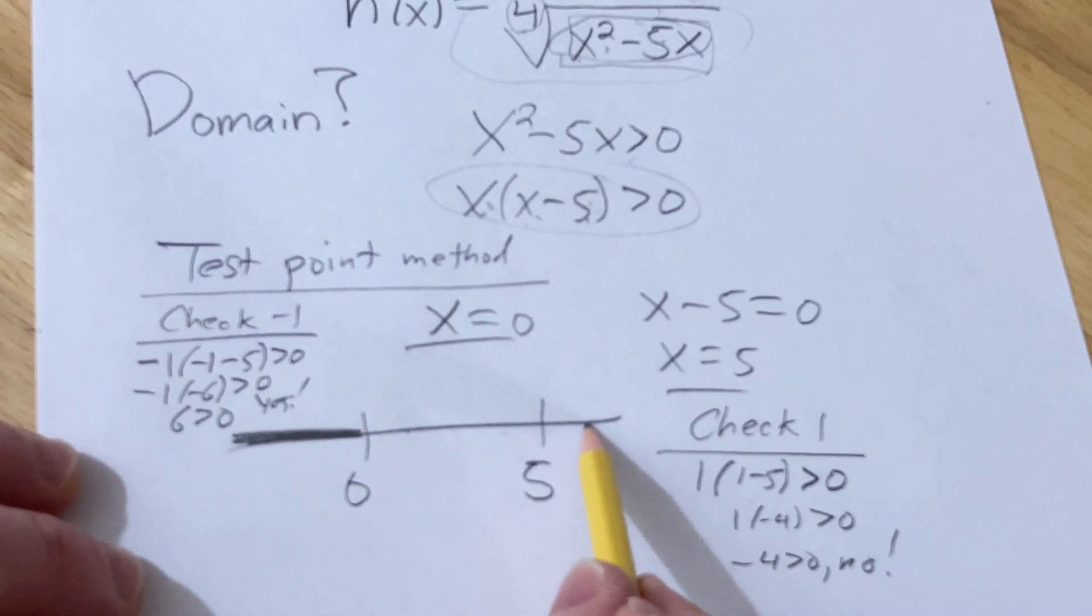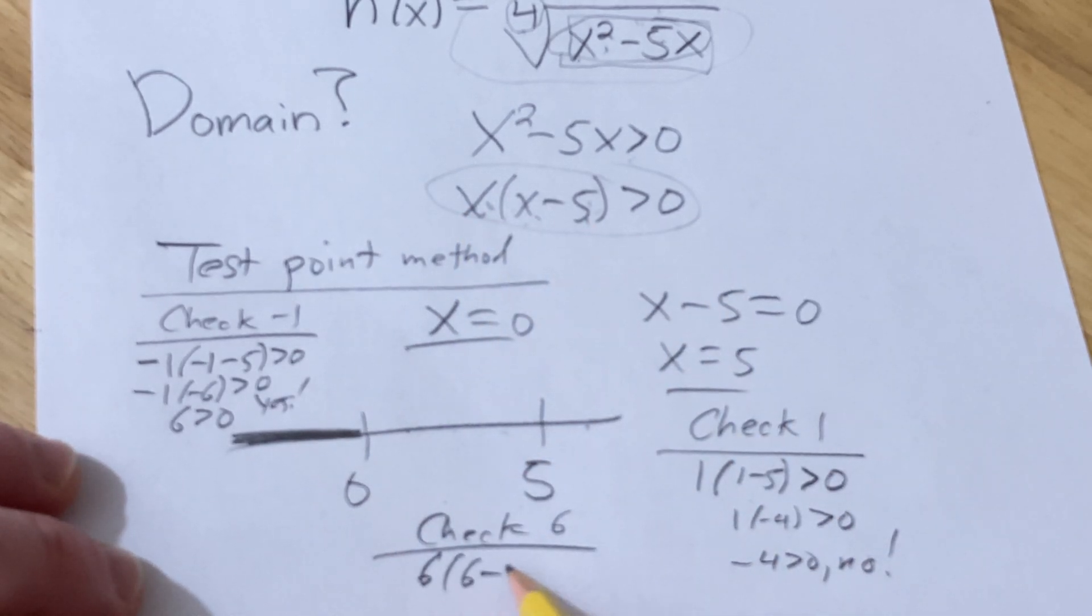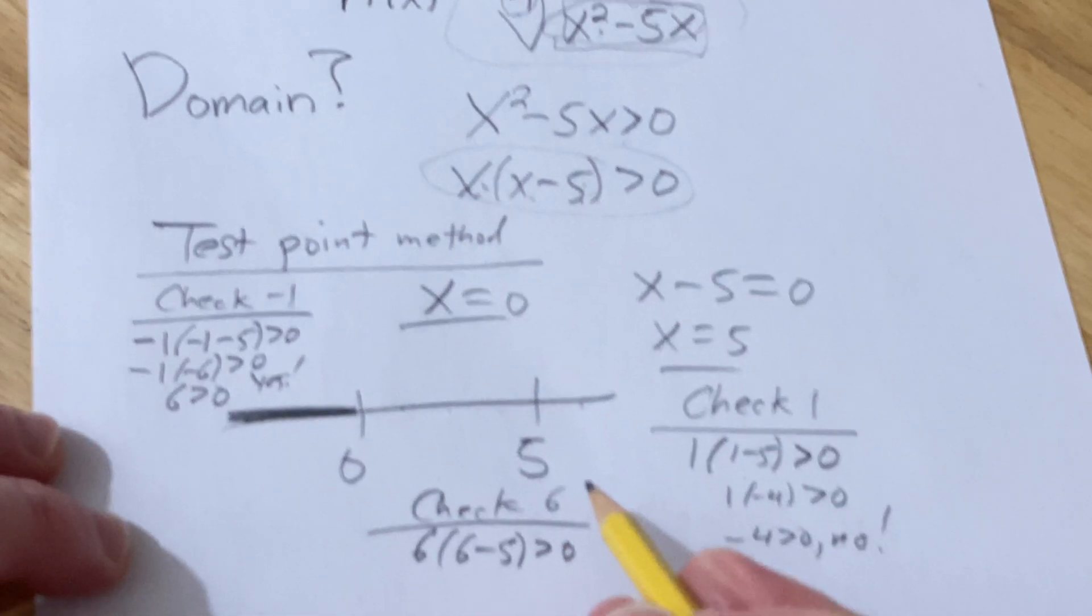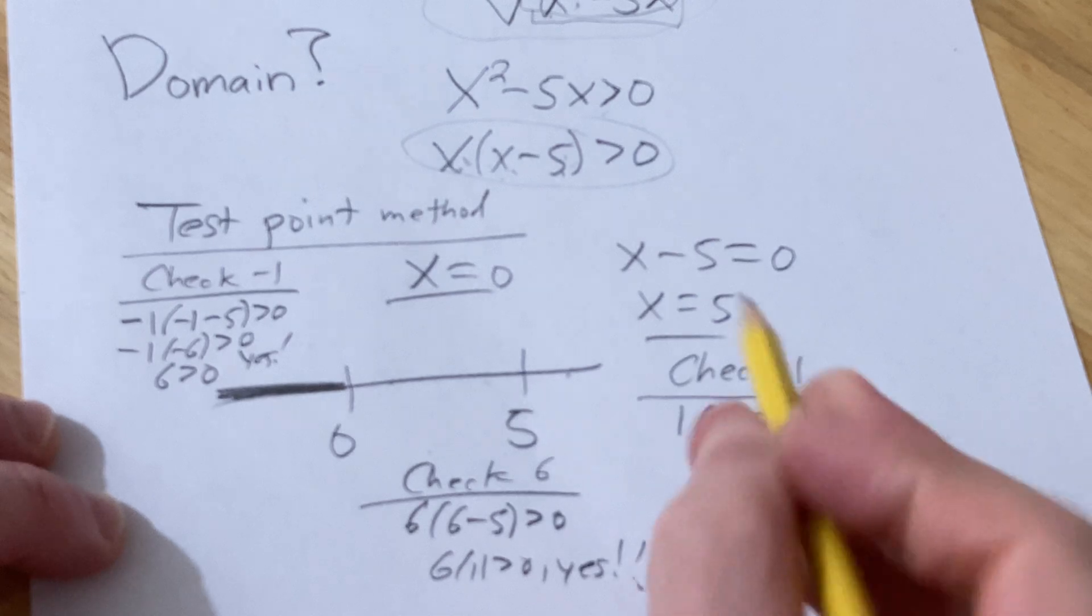So that's no shade. Let's check a number over here, how about six? Plugging in six, we get six times (six minus five) greater than zero. That's six times one, greater than zero. That's true, so we shade.